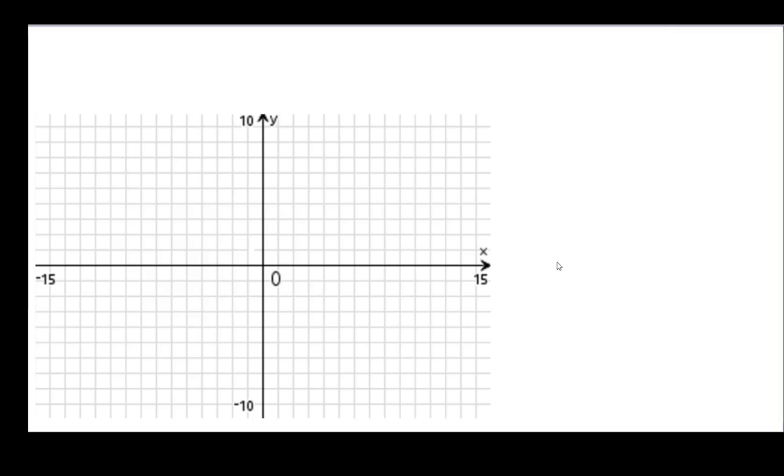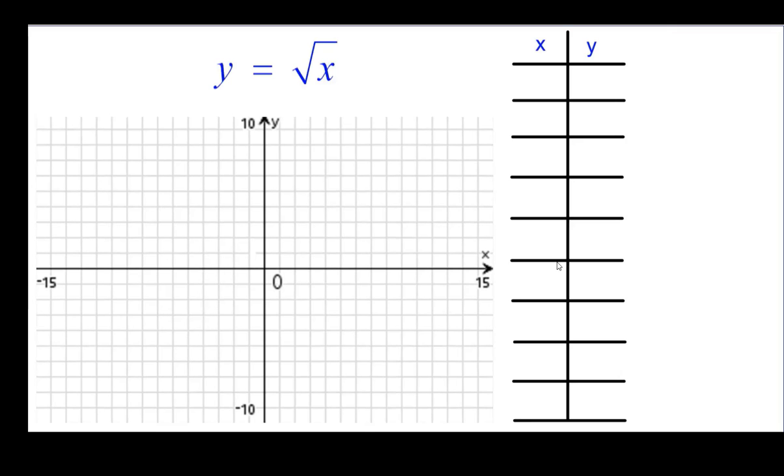So you'll need a grid. And we're going to need to make a table. Instead of using our traditional numbers, I'm going to use numbers that we can easily take the square root of. We can't take square root of negative numbers, so that will have to be positives.